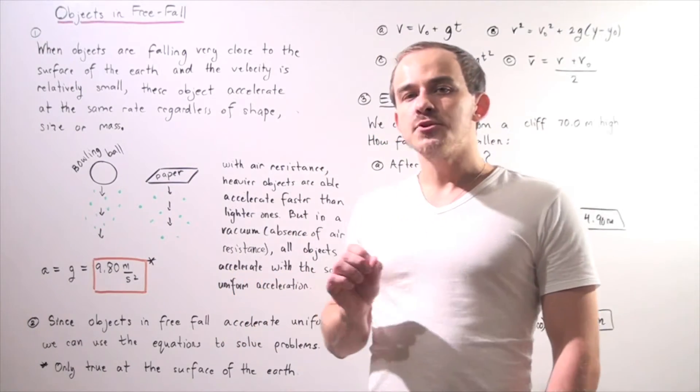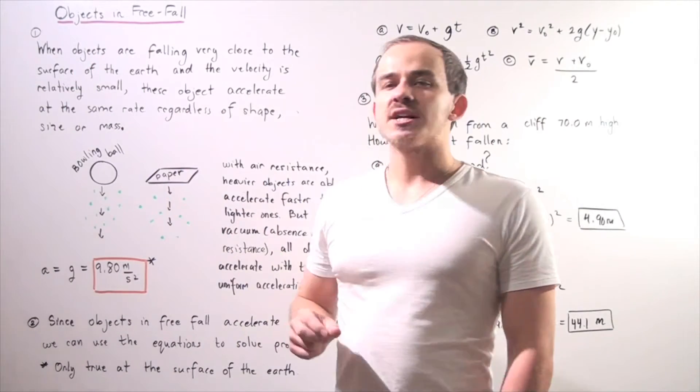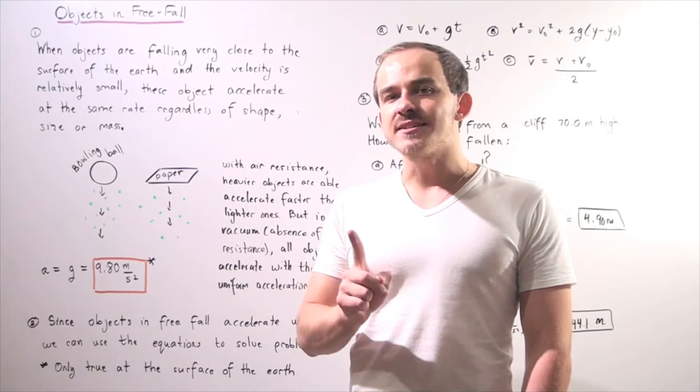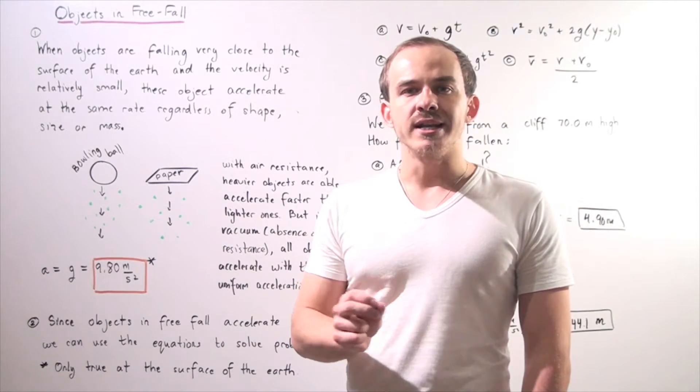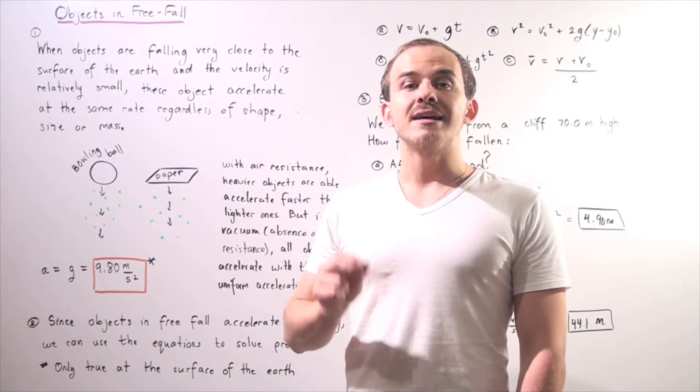Let's look at the following assumption that is very often used in physics. When objects are falling very close to the surface of the earth and their velocity is relatively small, these objects are accelerating at the same exact rate regardless of their shape, size, or mass.